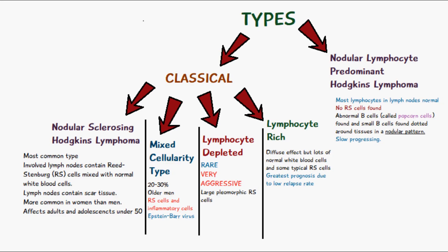The lymphocyte rich type has a very diffuse effect throughout the body, but there are still a lot of normal white blood cells and a few typical Reed-Sternberg cells. The lymphocyte rich type has the greatest prognosis because there is a very low likelihood of a relapse.